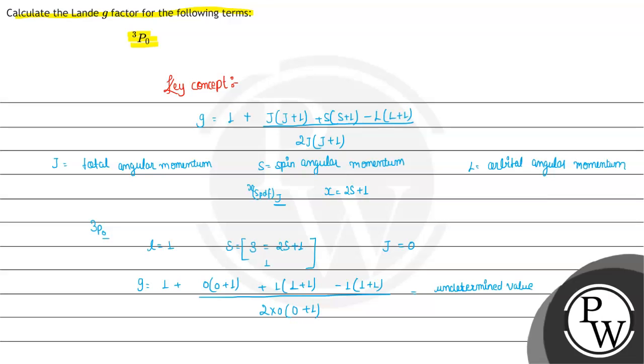Because in the numerator we are left with 0, whenever j equals 0 we will get an undetermined value for g. Hope you understood it well, thank you.